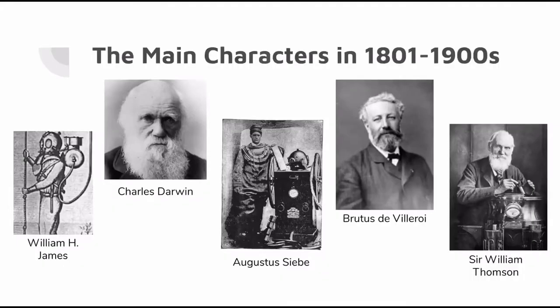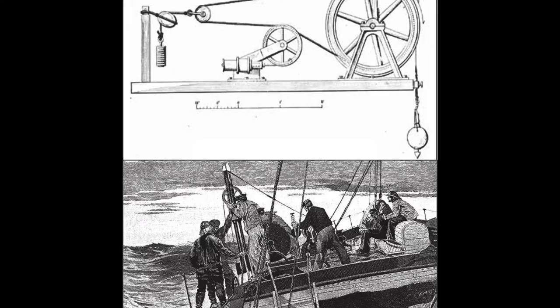Sir William Thompson was an Irish physicist and engineer who invented an operational wireline sounding machine in 1872. These machines made it easier for researchers to survey the ocean depths more accurately.